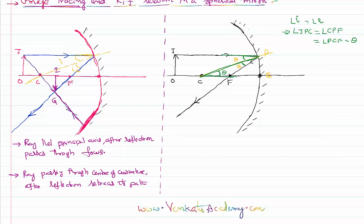From this second Z-shape, the angle above equals theta plus theta, so that angle becomes automatically 2-theta. Therefore, angle JPF equals angle PFC, both equal to 2-theta. Now I can identify two right-angle triangles. In right-angle triangle FQP, I can write tan(2θ) = PQ / FQ, where FQ is the focal length F. In right-angle triangle CQP, I can write tan(θ) = PQ / CQ, where CQ is the radius of curvature R.